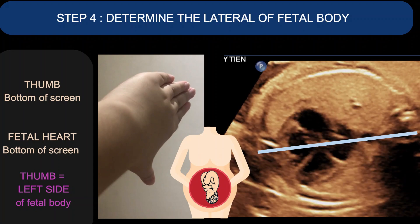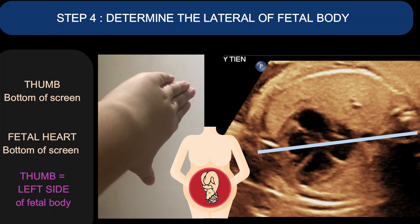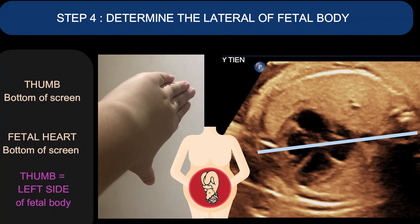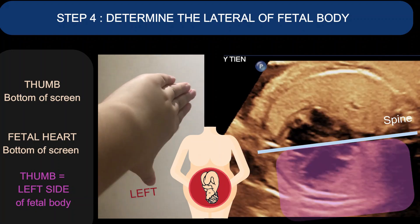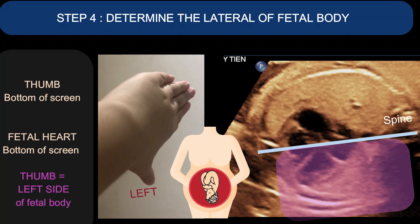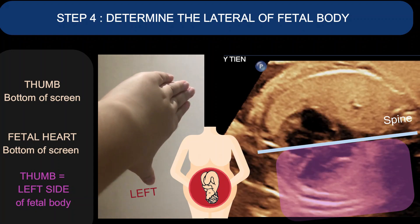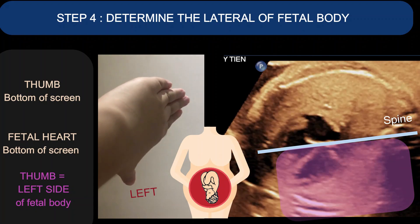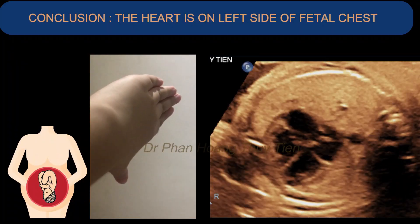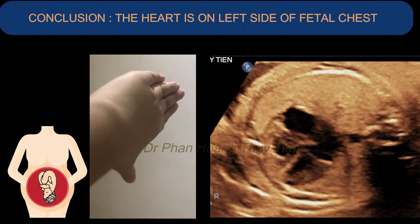Step 4 — determine the laterality of the fetal body: with the transverse view, create a straight line from the spine that divides the fetal body in half, then apply the technique. You will see that the thumb is at the bottom of the screen; the fetal heart is also at the bottom of the screen. The thumb points to the fetal left side, which leads us to the conclusion that the heart is on the left side of the fetal chest.